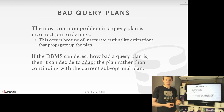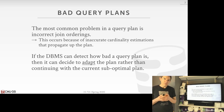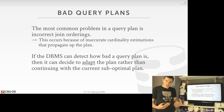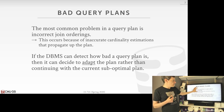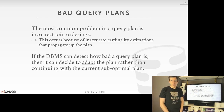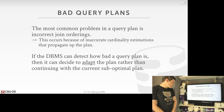The reason we select an incorrect ordering is inaccurate cardinality estimations — we think our join is going to produce X tuples, but it's really going to be X times Y, or some larger multiple than what we expected. This is a recurring theme we're going to have to overcome, and today's discussion covers techniques to address it.